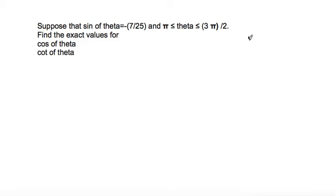The way I would start this problem is to first draw a little coordinate axis. We know that our theta is between pi, this is 0, this is pi over 2, here's pi and here's 3 pi over 2.